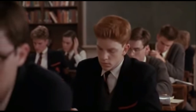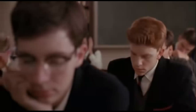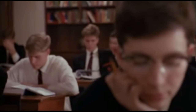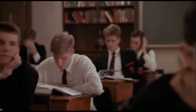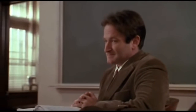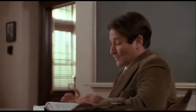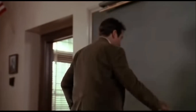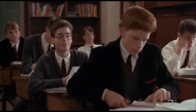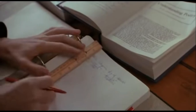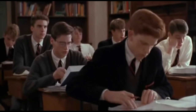To fully understand poetry, we must first be fluent with its meter, rhyme, and figures of speech, then ask two questions. One, how artfully has the objective of the poem been rendered? And two, how important is that objective? Question one rates the poem's perfection. Question two rates its importance. And once these questions have been answered, determining the poem's greatness becomes a relatively simple matter. If the poem's score for perfection is plotted on the horizontal of a graph and its importance is plotted on the vertical, then calculating the total area of the poem yields the measure of its greatness.